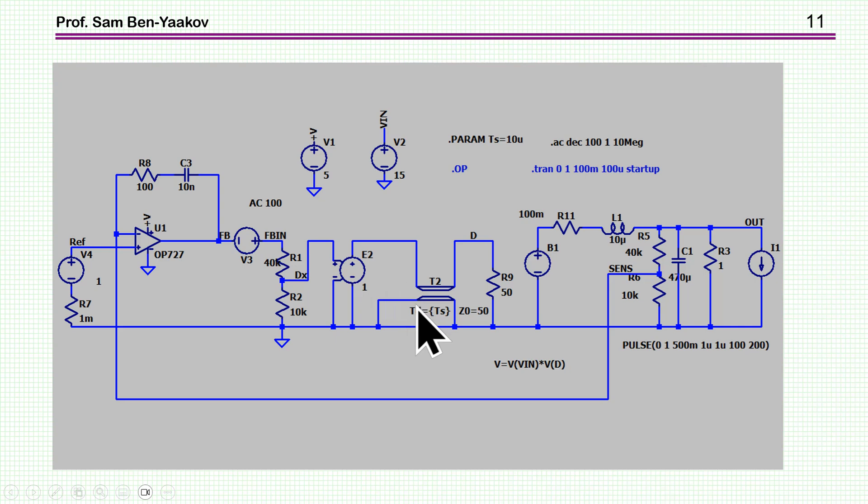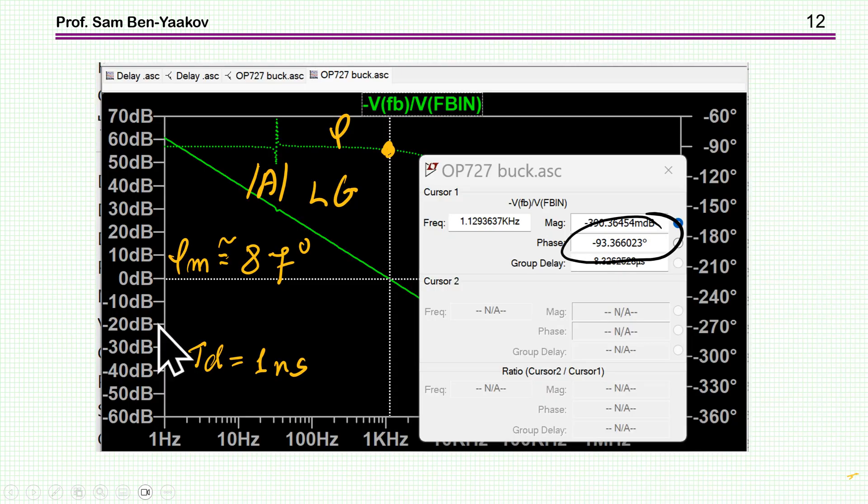So the first thing to do is to run it without the delay, just to see the loop gain of the system. And I'm getting the loop gain by this AC source. And here, we have the signal actually getting into here all the way and then it's coming back. So the ratio between the voltage here and the voltage here is in fact the loop gain of the system. So here it is, this is the loop gain of the system without the delay. I've set the delay to one nanosecond. Well, it won't take zero. So I just put one nanosecond.